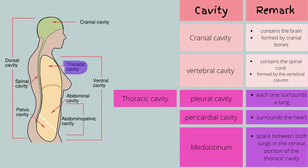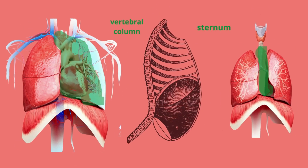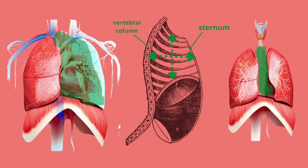Then we have the thoracic cavity, or the chest cavity. It contains the pleural and the pericardial cavities and the mediastinum. As written in this table, each pleural cavity surrounds a lung. The pericardial cavity surrounds the heart, and the mediastinum is the space between both lungs in the central portion of the thoracic cavity. If you didn't understand where the mediastinum is, it is the part highlighted in green.